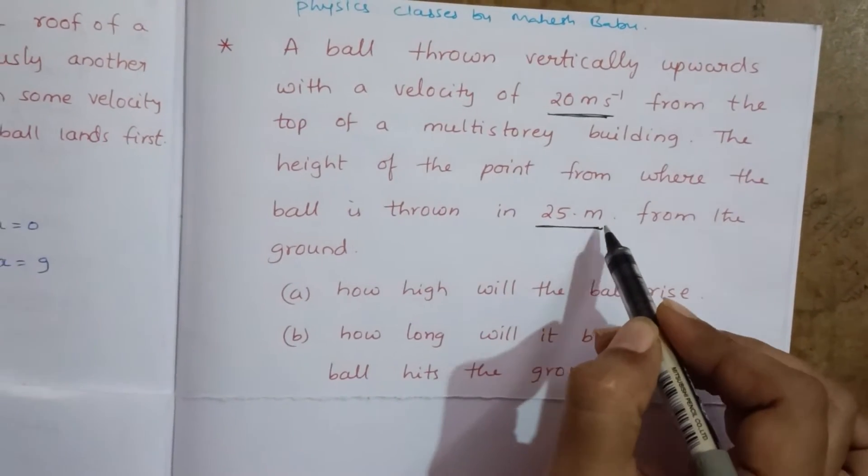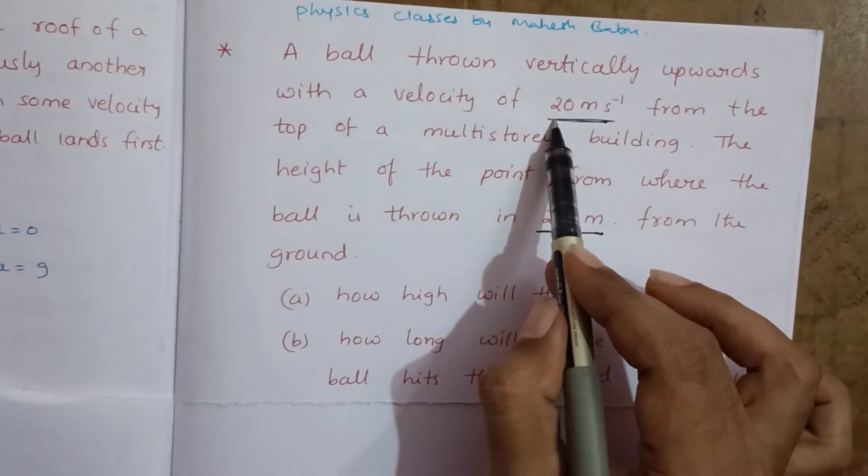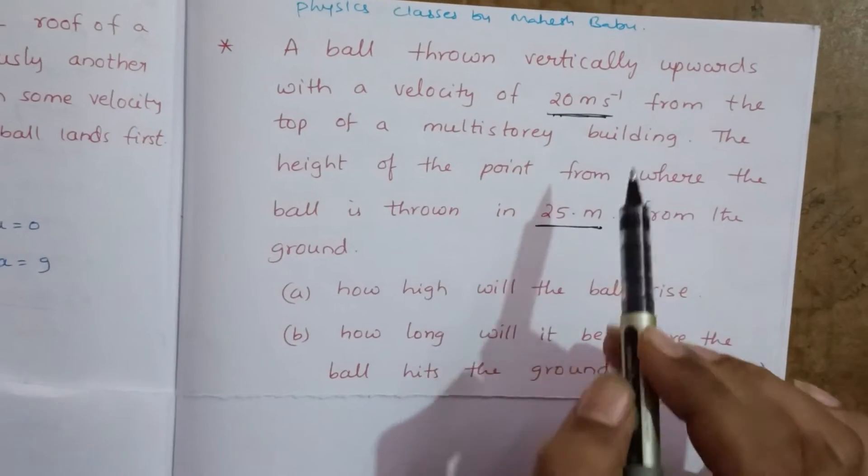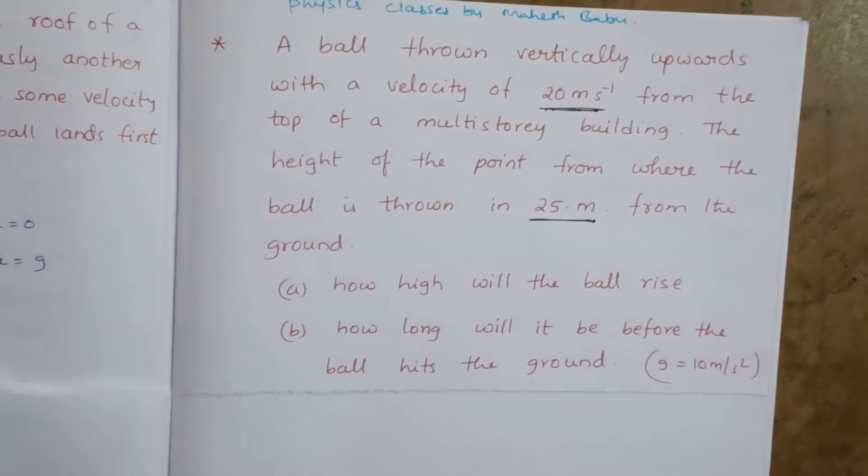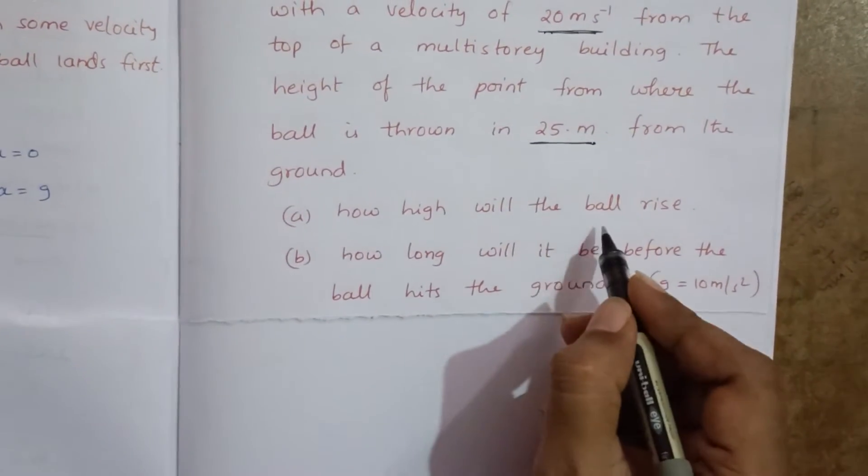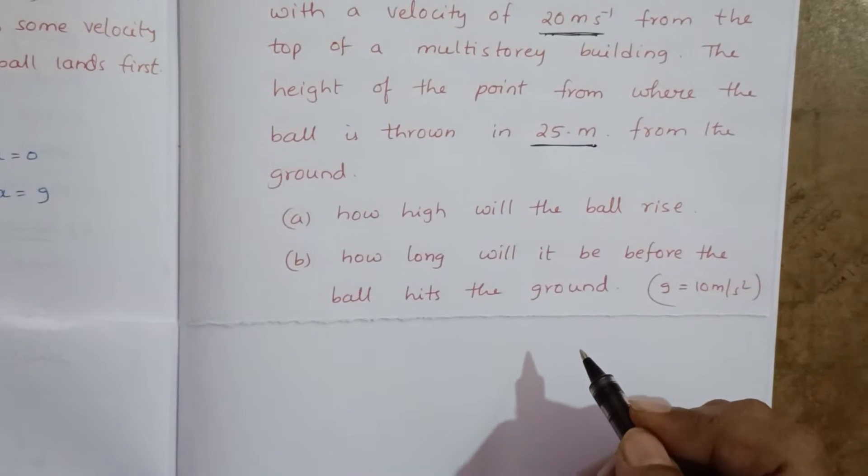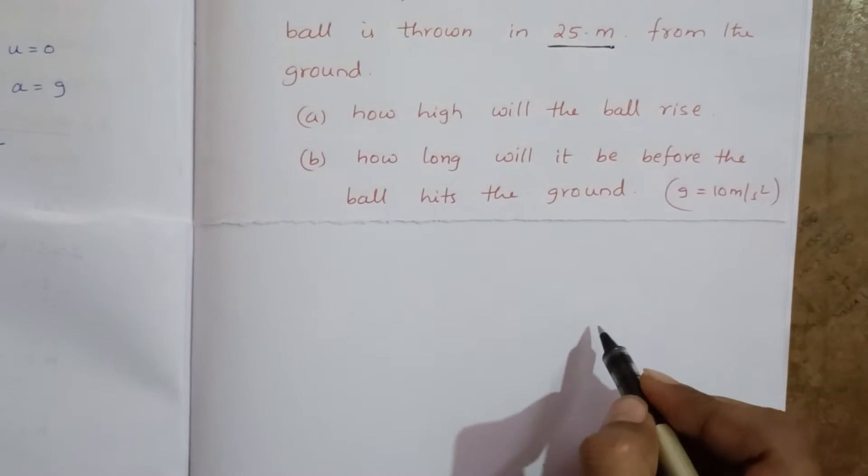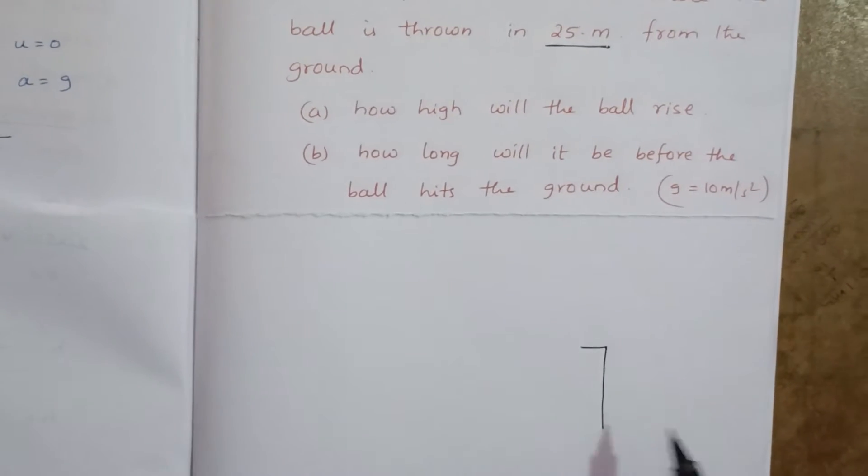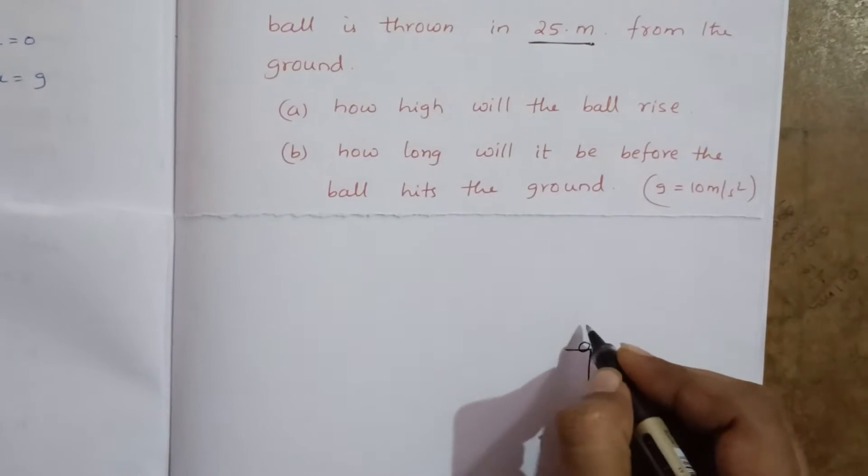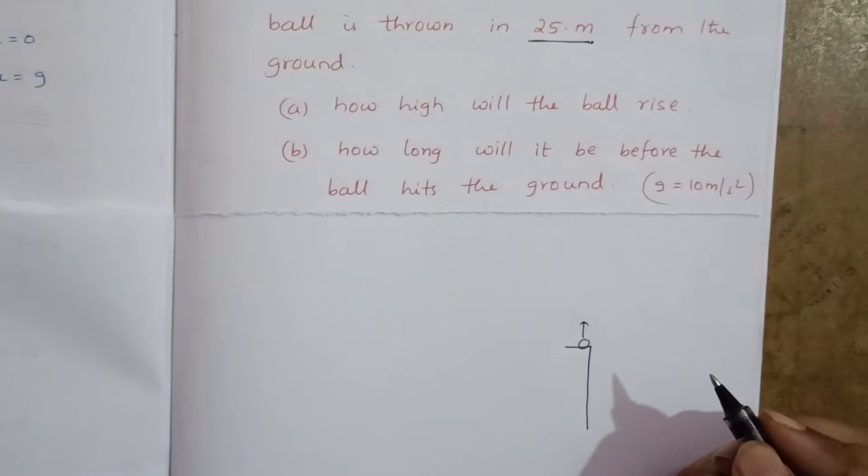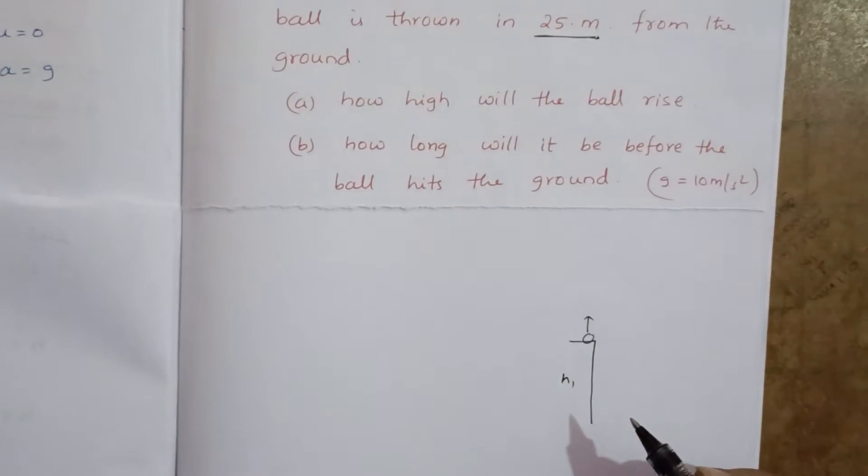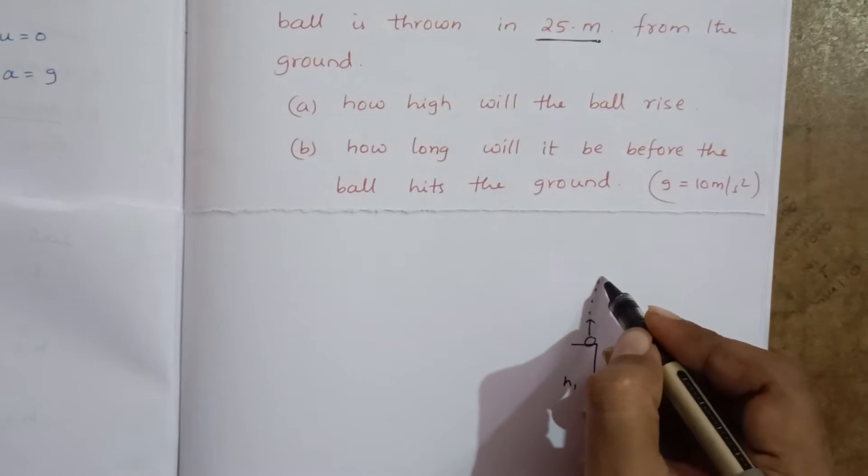From there onwards a ball is thrown with the initial velocity 20 meters per second upward. Now how high will the ball rise? See here, this is the building. From here onwards a ball is projected vertically upwards. Building height I am taking h₁, so it reaches maximum height and returns to the ground.